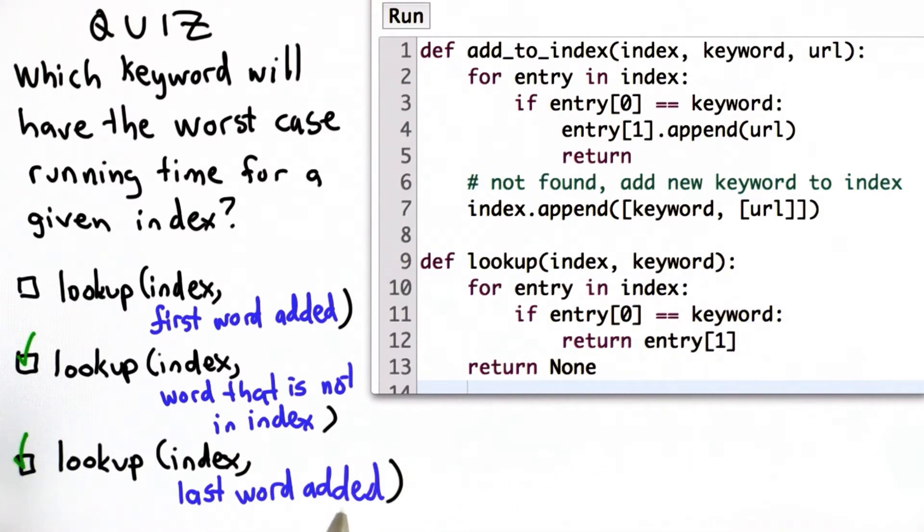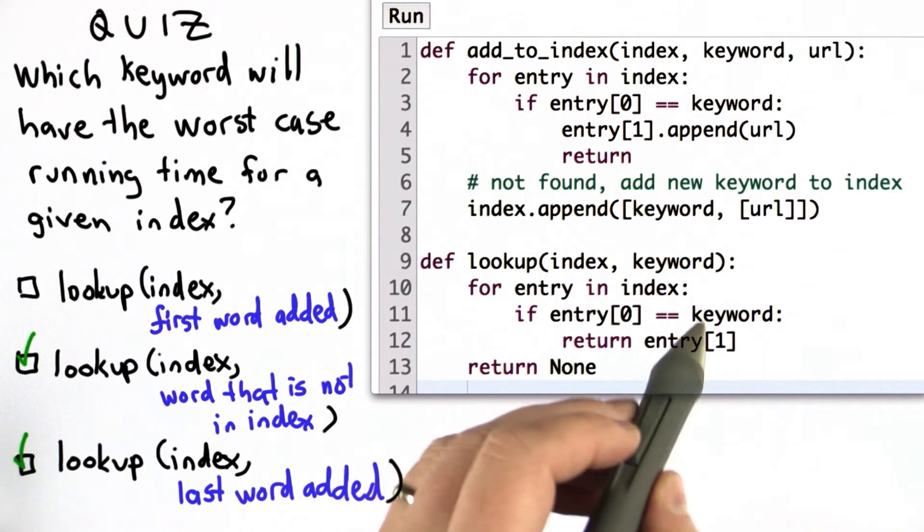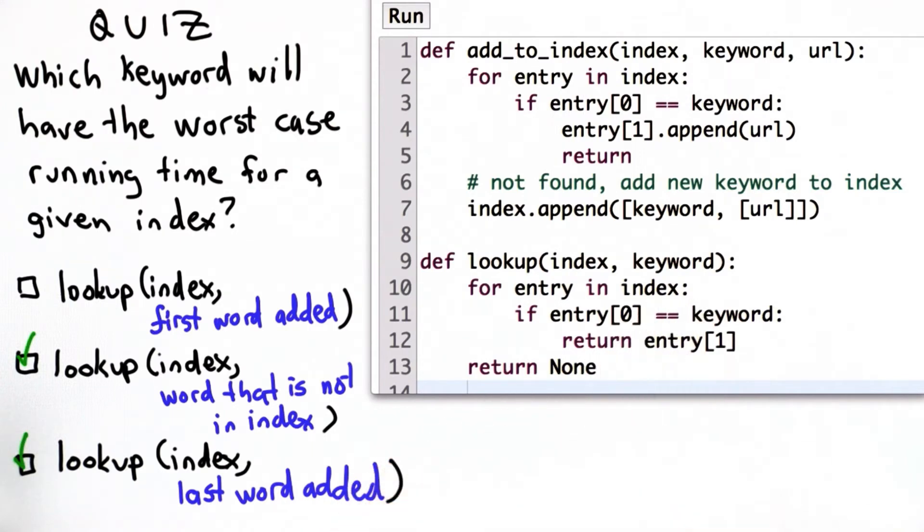One of the assumptions in all this analysis is that the time it takes to go through the loop doesn't depend on the actual keyword that's passed in. That's assuming that this equal comparison takes the same amount of time, that it doesn't matter what the keyword is, the time to do this comparison is the same.